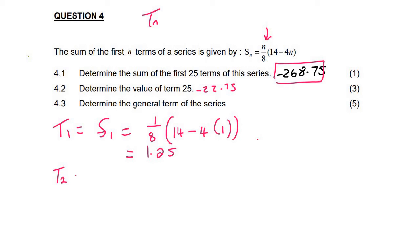Now remember what we said just now. We said that to find term two, you could say S2 minus S1. And so the sum of two terms is 2 over 8, 14 minus 4 times 2, minus the sum of 1, which we already know is 1.25. And if we work this out, we get 0.25.